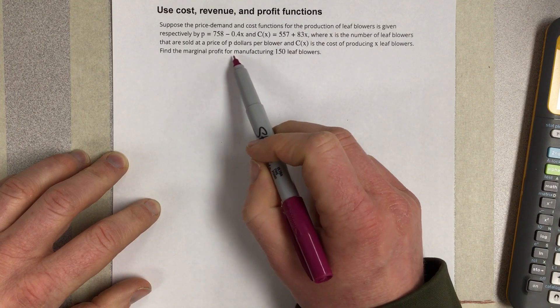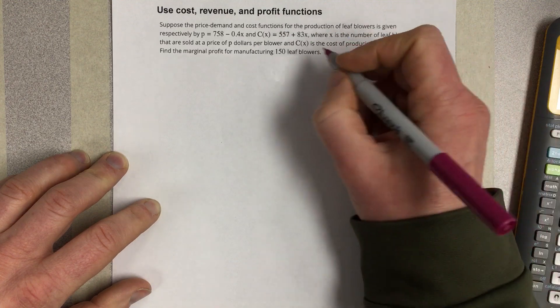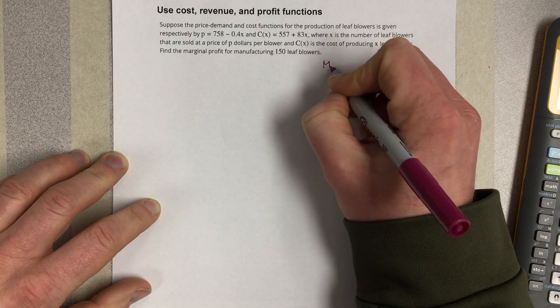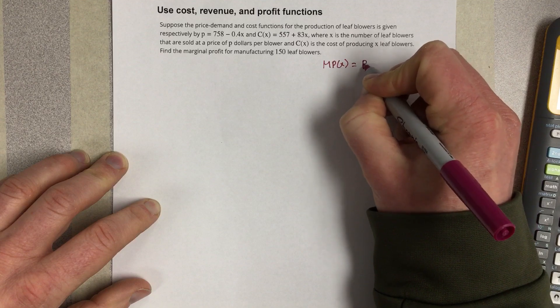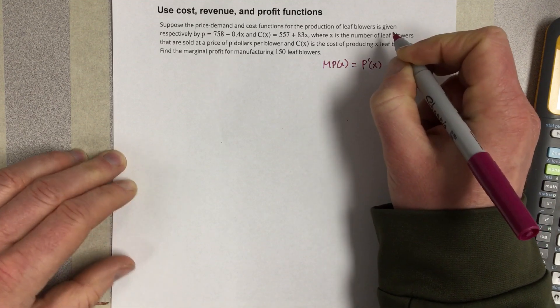Find the marginal profit for manufacturing of 150 leaf blowers. So I can tell you that marginal profit is equal to the derivative of the profit equation.